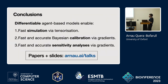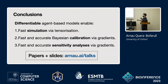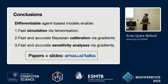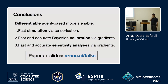In conclusion, if you have a differentiable agent-based model, you can run it very fast due to tensorization, perform fast and accurate Bayesian calibration via gradients, and also obtain faster and more accurate sensitivity analysis through gradients. Thanks.